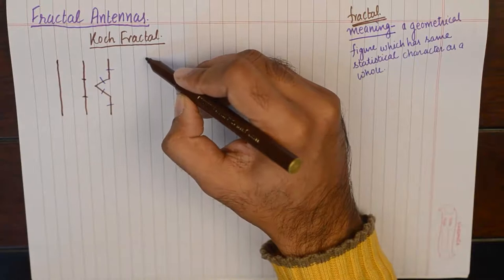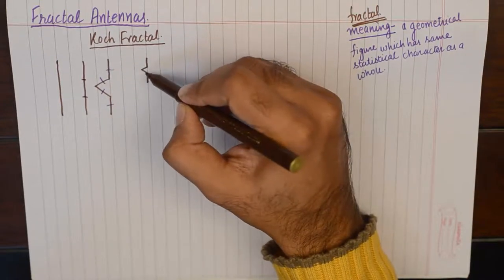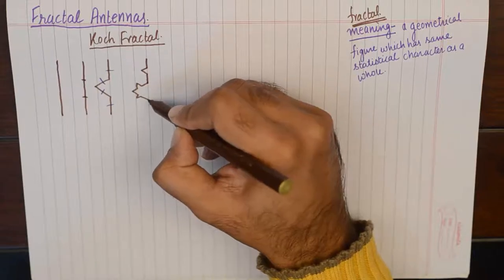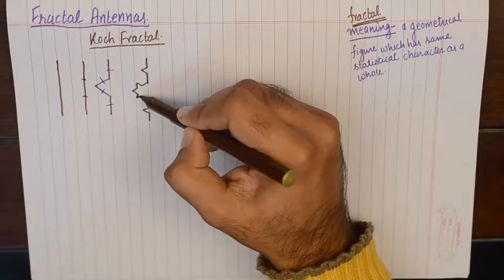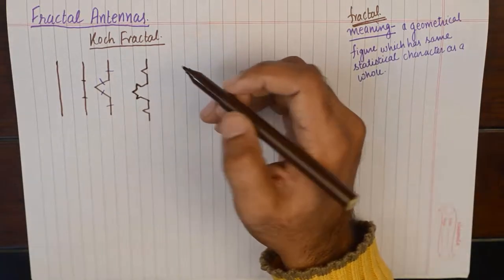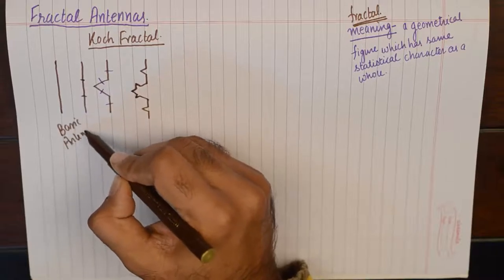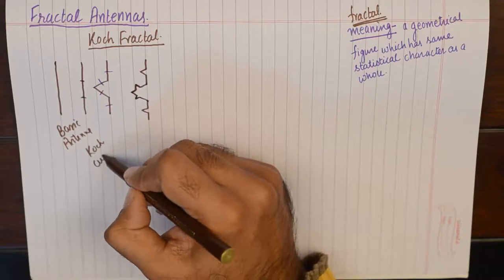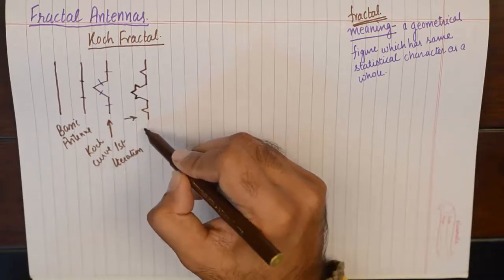That will result in a figure where a bent is introduced in each of the four straight lines. So from the basic antenna, I inserted a Koch curve and found my first iteration, and from there I am onto my second iteration.